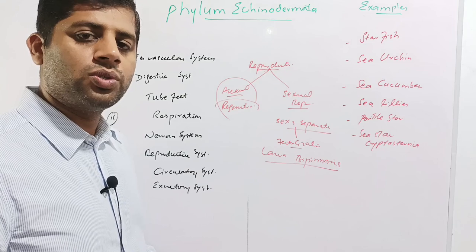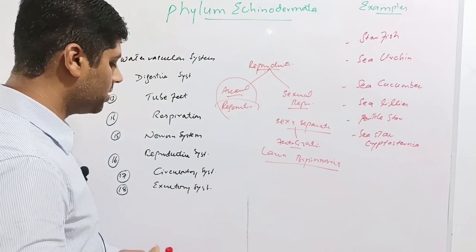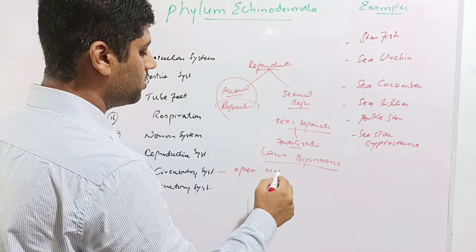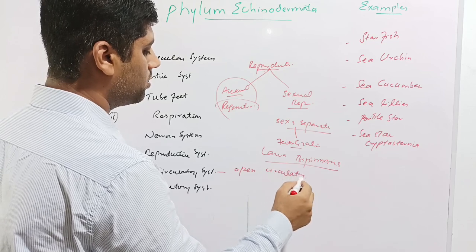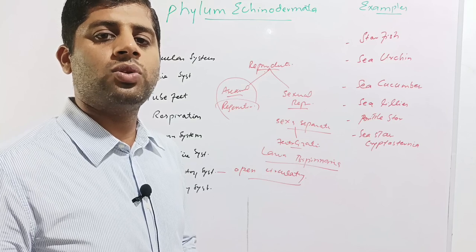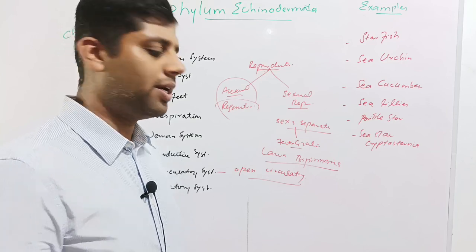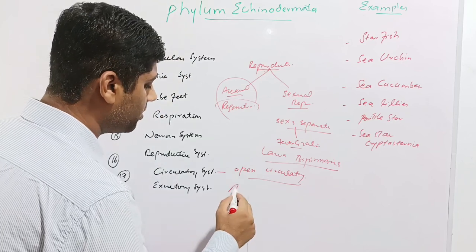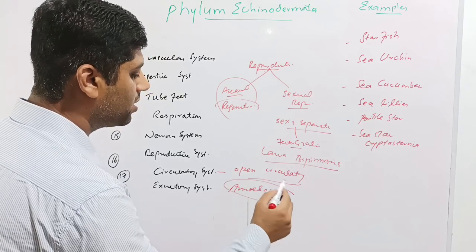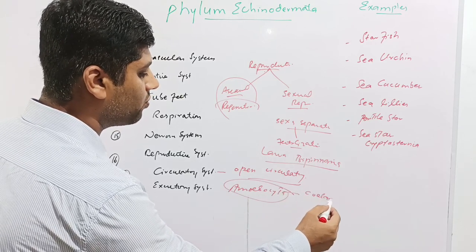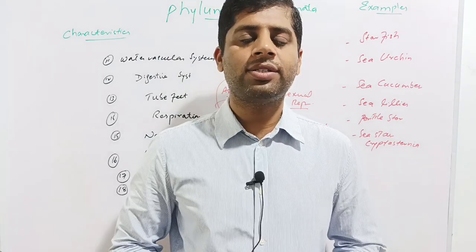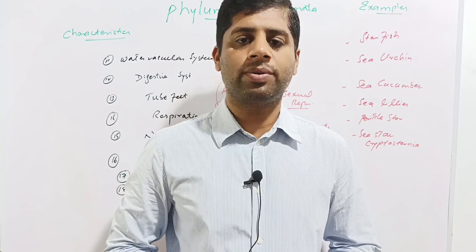Echinoderms do not show a well-developed circulatory system; however, an open circulatory system is present for transportation. They also lack a specialized excretory system. Excretory cells called amoebocytes are present in the coelom, where they collect waste from the body and remove it.